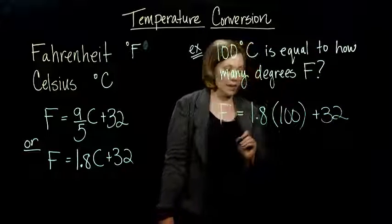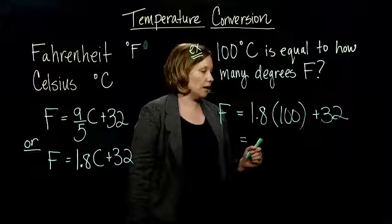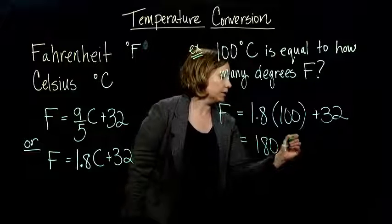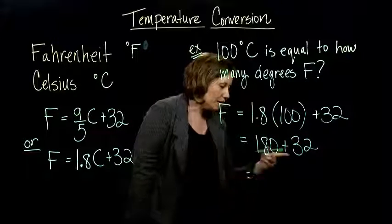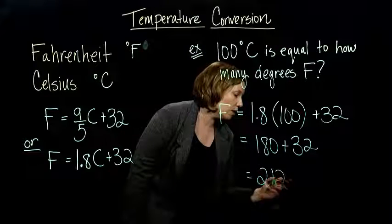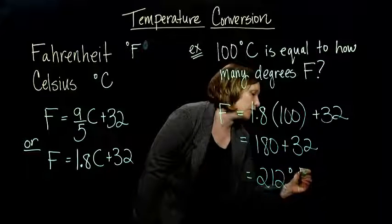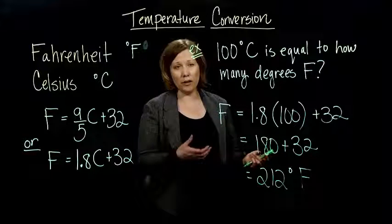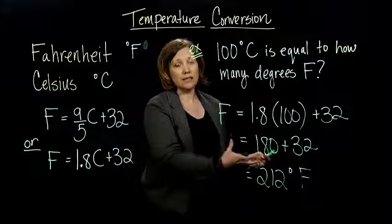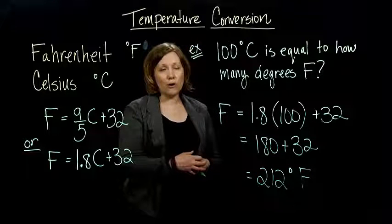Now all I have to do is the math. 1.8 times 100 is 180 plus 32 by following order of operations, remember that? So I get 212, and that's going to be in degrees Fahrenheit. So that's all there is to it. Really just plug in the formula when you're going from Fahrenheit to Celsius. But what if you want to go the other way?